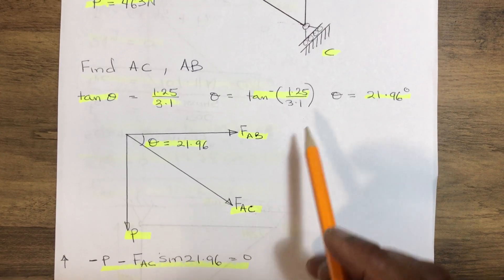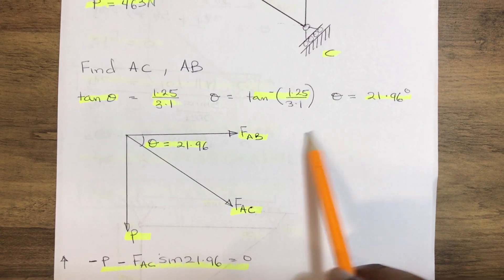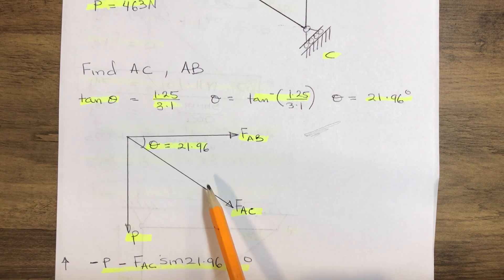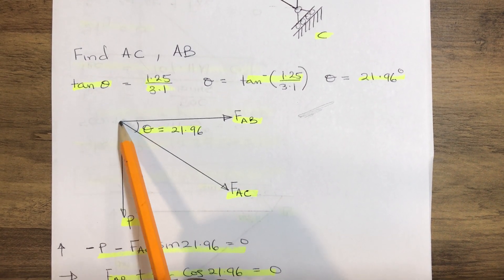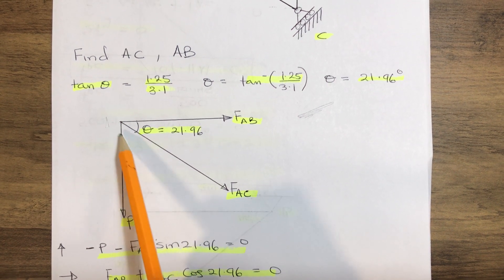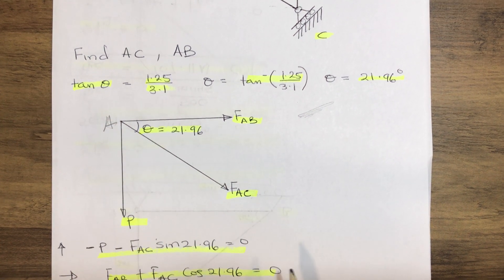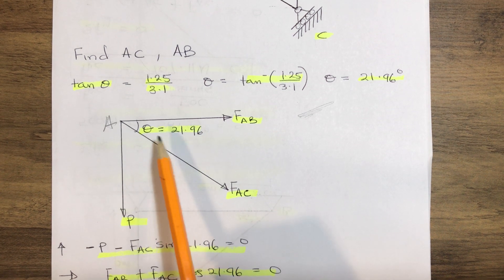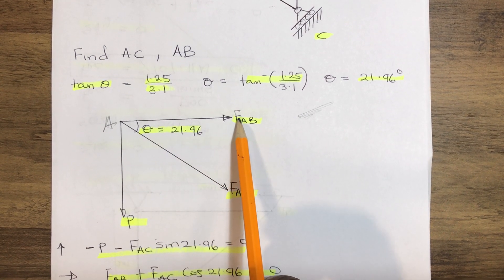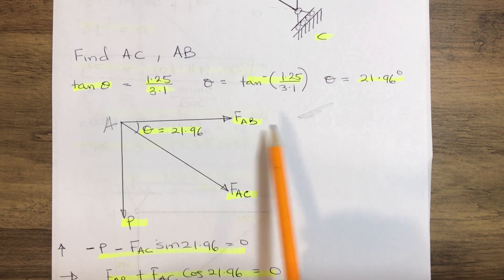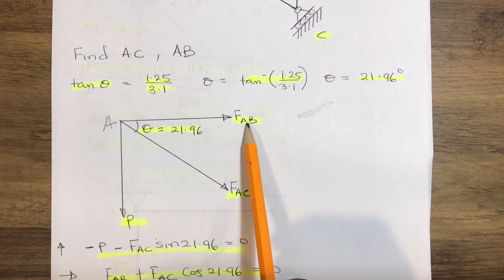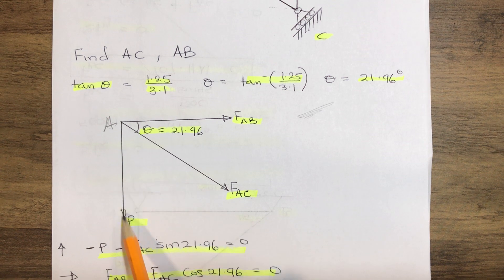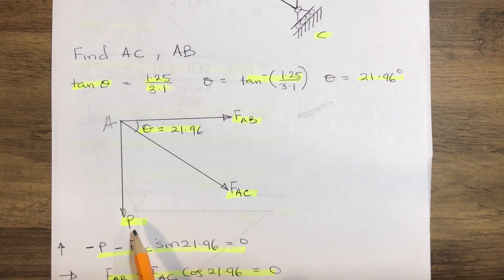So therefore we draw the free body diagram. We have our free body diagram here from point A. Now we know our force FAB is acting horizontally on the positive side and our force P is acting downward vertically.